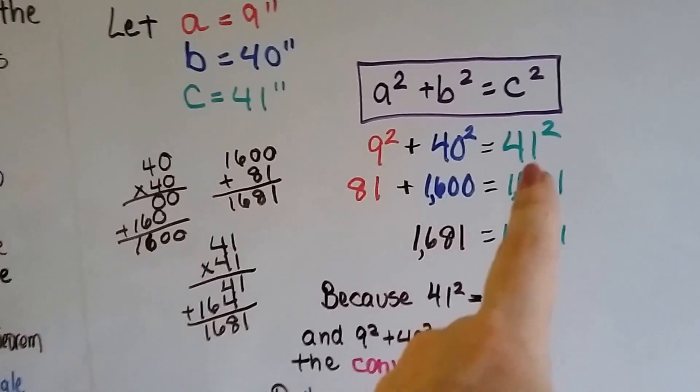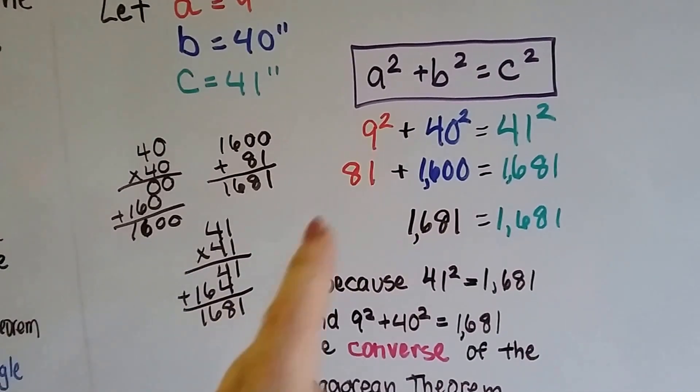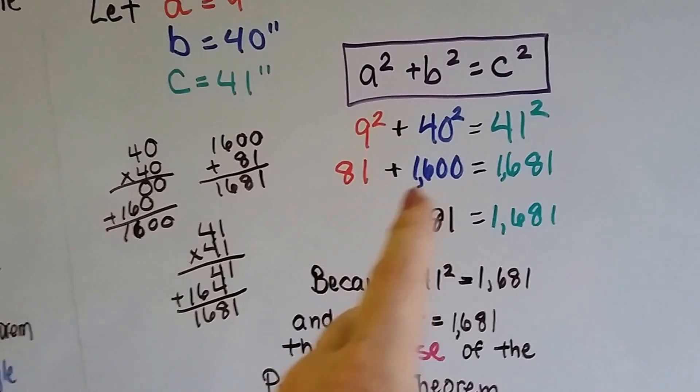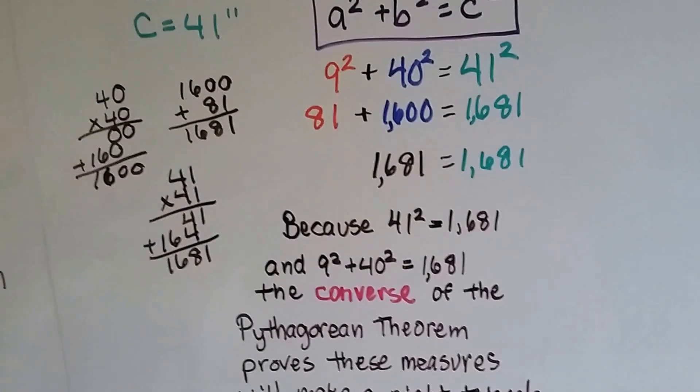And 41 times 41 is 1681. And when we add the 1600 and the 81, we get 1681 equals 1681.